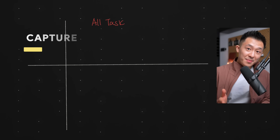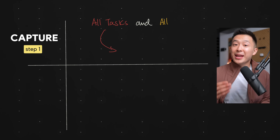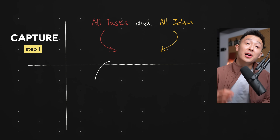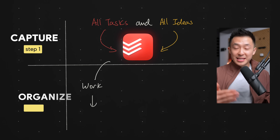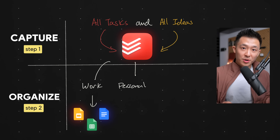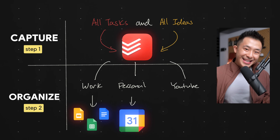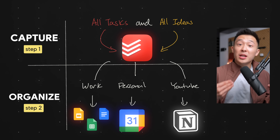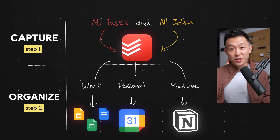In a nutshell, step one: I literally capture all my ideas and tasks related to my work and my personal life into an app called Todoist. Then when I sit down in front of a laptop where there's a keyboard, step two: I organize all those ideas and tasks into their corresponding locations — Google Workspace, Calendar, Notion. Let's quickly break this down.